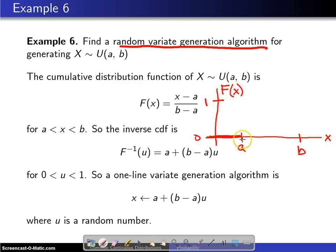It is zero for x values less than a. It is linear between a and b. And then it is one thereafter. And that is the cumulative distribution function.